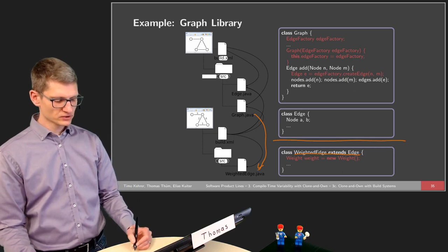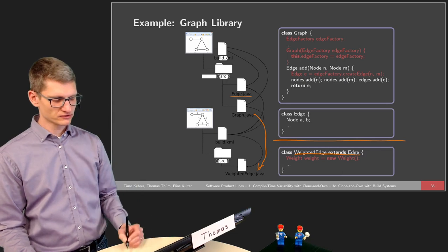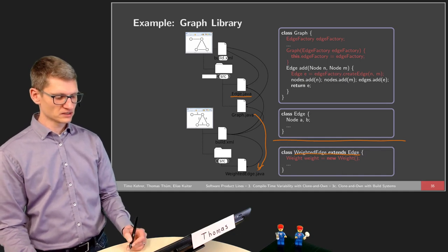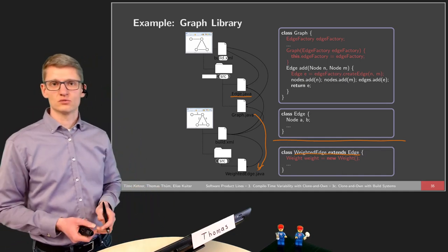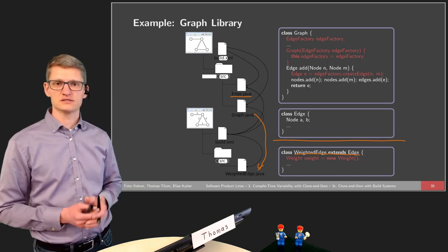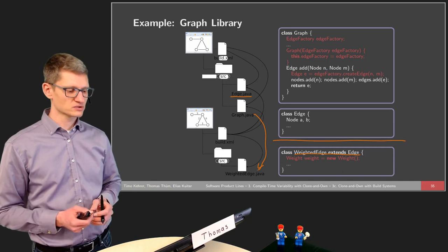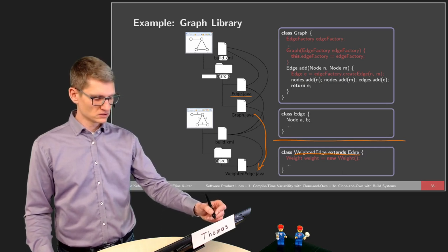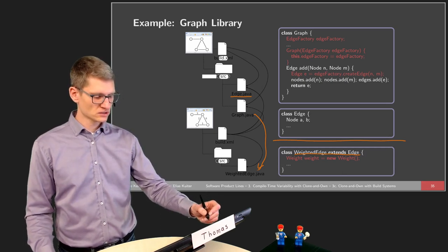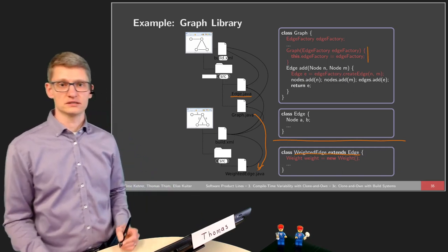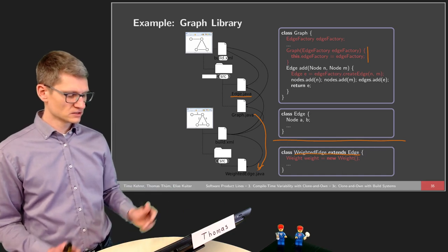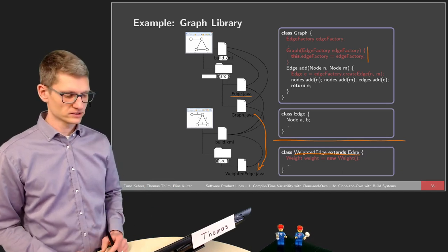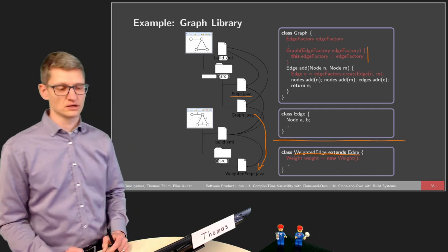We can reuse and make use of the original implementation, so any change in the original implementation will be automatically applied. The way this works is by using the abstract factory pattern — or more precisely, a factory pattern — to delegate edge creation during graph initialization. If you want more details, refer back to the third video for lecture two, where the edge factory is explained in detail.